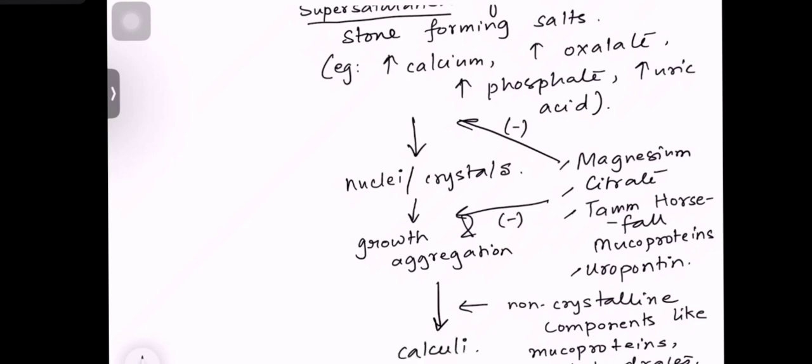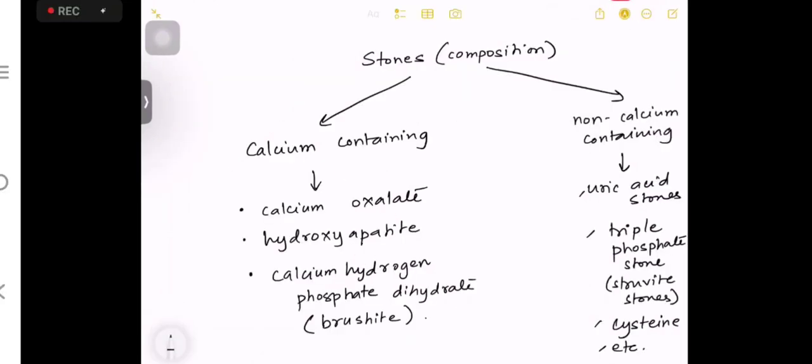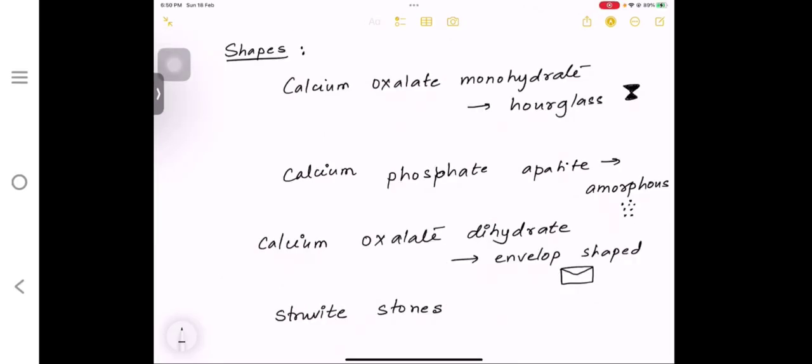Now you have to know the stone composition. There are some stone-forming salts—calcium oxalate, hydroxyapatite, calcium hydrogen phosphate dihydrate which is called brushite stones. All these are calcium-containing stones. There can be non-calcium-containing stones which can be uric acid stone, triphosphate stones, cysteine-related stones, and some others. This was the stone's classification based on composition.